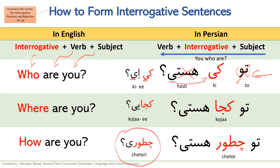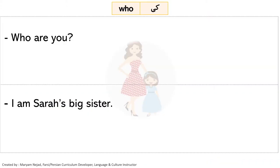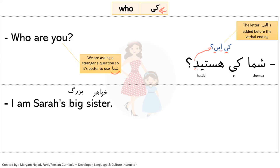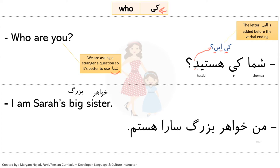Let's look at examples with 'key' (who). First question: 'Who are you?' Since we are asking a stranger, it's better to use the formal subject pronoun 'shoma': 'shoma ki hastyd'. The more informal form is 'ki in' — the conjugation 'id' changes to 'n', and we add an aleph before it since 'key' ends in the long vowel 'ya', giving 'shoma kiin'. The answer: 'I am Sarah's big sister' — 'bozorg' (big), 'khahar' (sister), with two ezafas connecting the phrase.